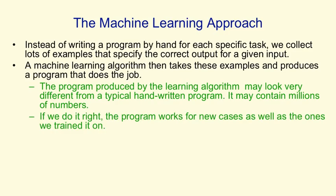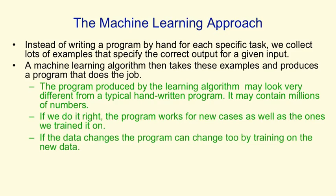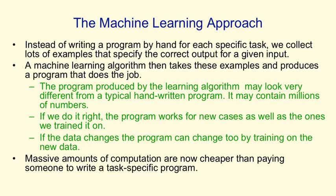And if the data changes, we should be able to change the program relatively easily by retraining it on the new data. Now, massive amounts of computation are cheaper than paying someone to write a program for a specific task. So we can afford big, complicated machine learning programs to produce these task-specific systems for us.